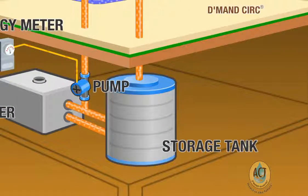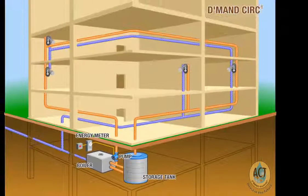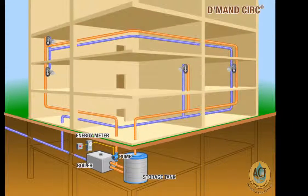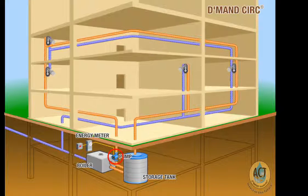In order for occupants to receive hot water without a significant wait time, the hot water reserve is circulated throughout the building by a pump that most often operates on a continuous basis, 24 hours a day. This is known as a recirculation loop.